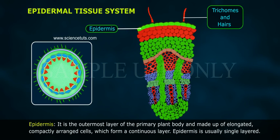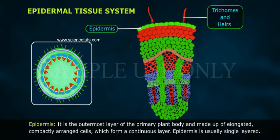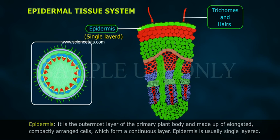Epidermis: It is the outermost layer of the primary plant body and is made up of elongated, compactly arranged cells which form a continuous layer. Epidermis is usually single-layered.